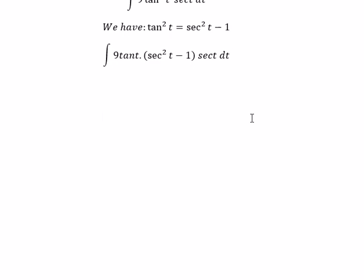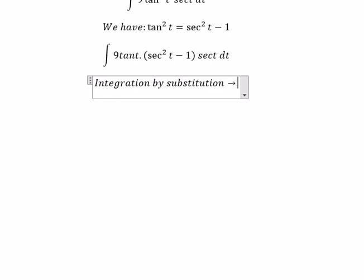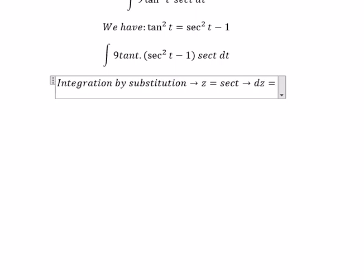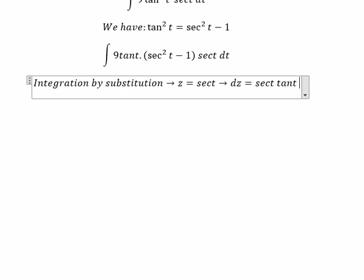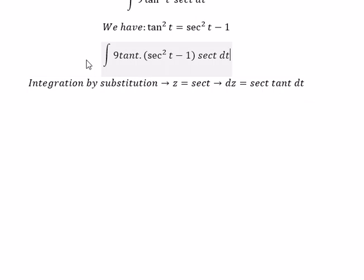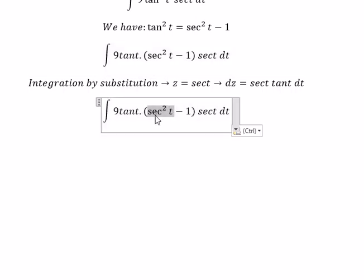Next, we use integration by substitution. We put z equal to sec t, so dz equals sec t tan t dt. This gives us z squared times tan t times sec t dt, which we replace with dz.